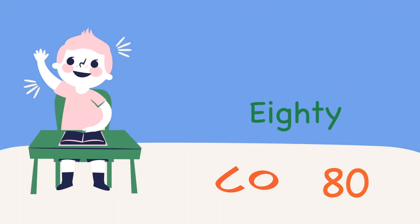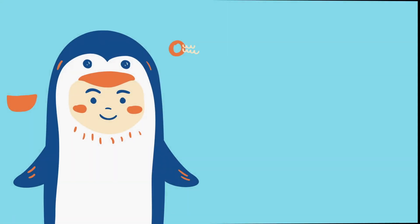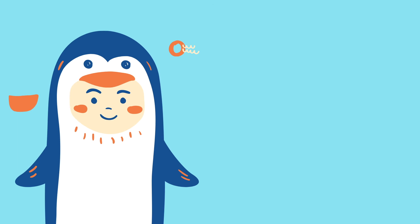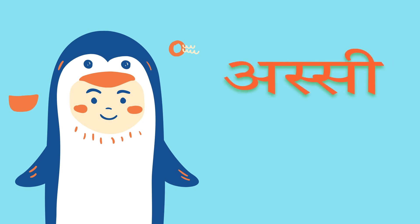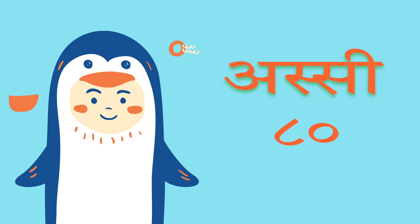Eighty in Hindi is 'assi'. That's assi — eight and a zero, aath aur shunya — assi.